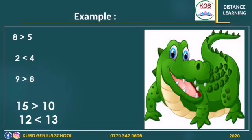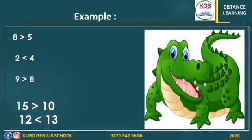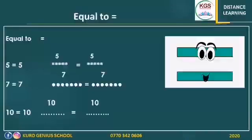Here we have more examples. But first, look at the alligator — he looks so hungry. Let's read them together, starting from the left. Eight is greater than five. Two is less than four. Nine is greater than eight. Fifteen is greater than ten. Twelve is less than thirteen.